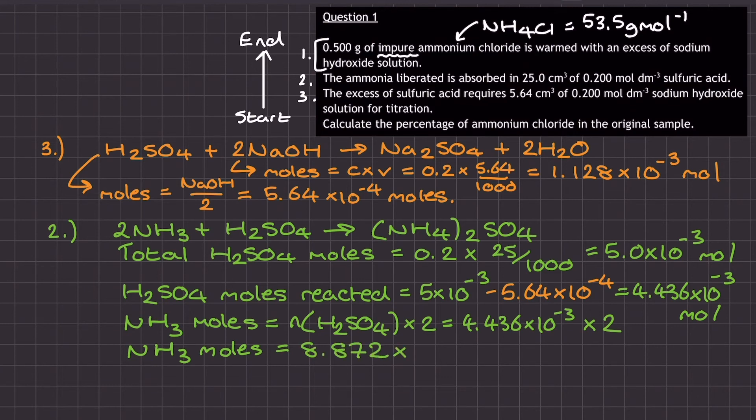The value for the number of moles of ammonia is 8.872 times 10 to the power of minus 3 mole. And this is equal to the number of moles of ammonia that must have been produced in stage 1.